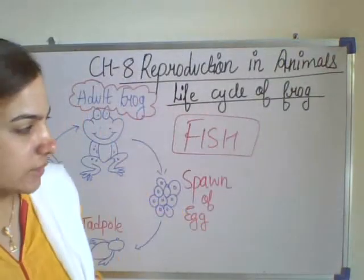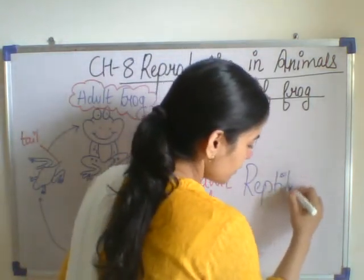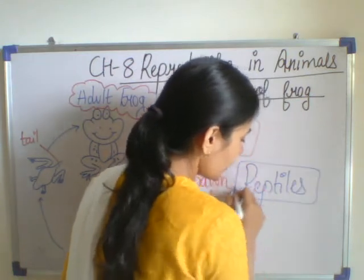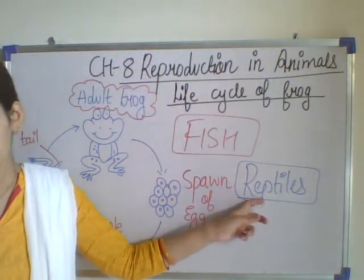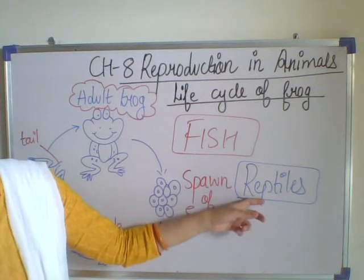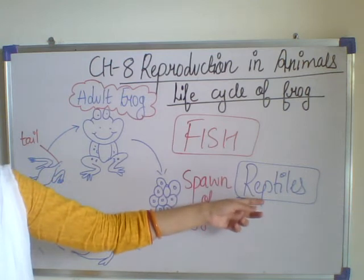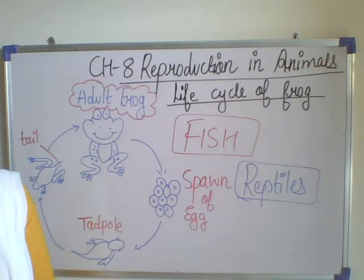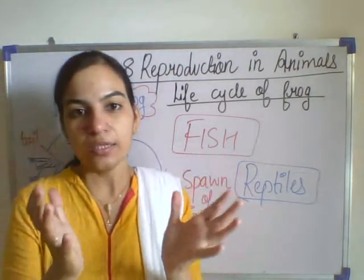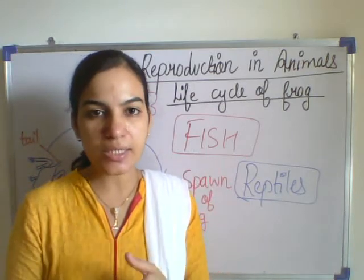Next comes reptiles. What are reptiles? Snakes, crocodile, lizard — these are all reptiles. Reptiles like lizard, turtle, snakes, and crocodile lay hard-shelled eggs on the ground. The outside covering of their egg is known as the egg shell, and that egg shell is very hard.